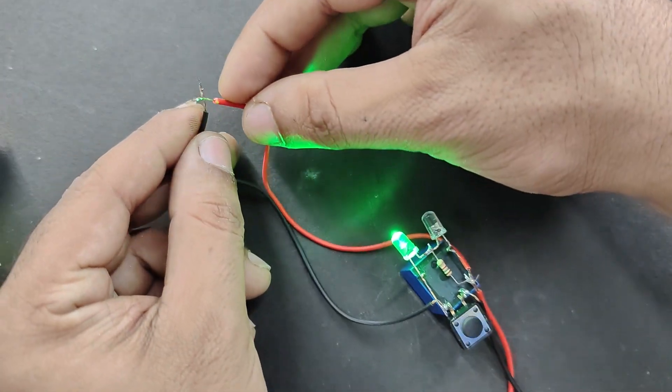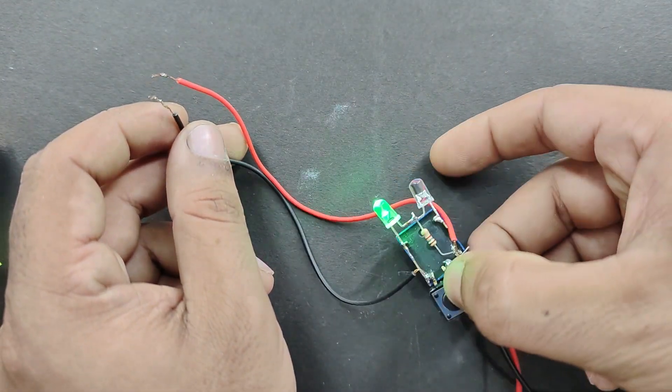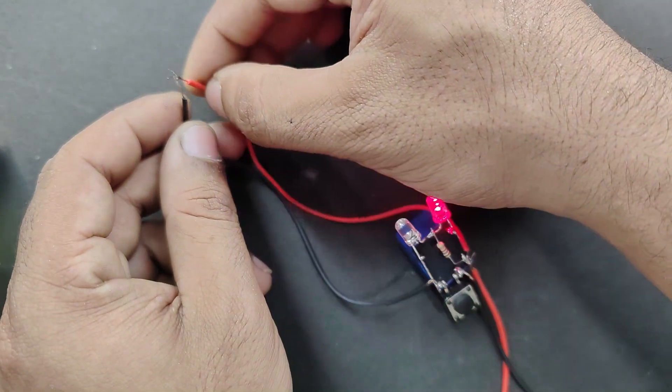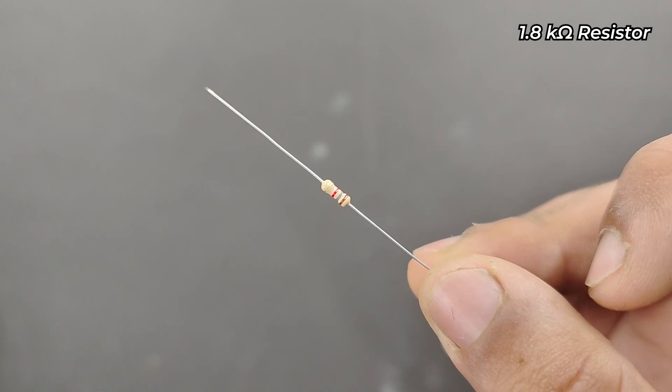Hello guys, welcome back to another video from Behind the Clutter. In today's video we're going to make a simple short circuit protection device. To make this project you need a 12 volt SPDT relay, 1.8 kohm resistor, 2 LEDs, a push button switch, and a few wires.